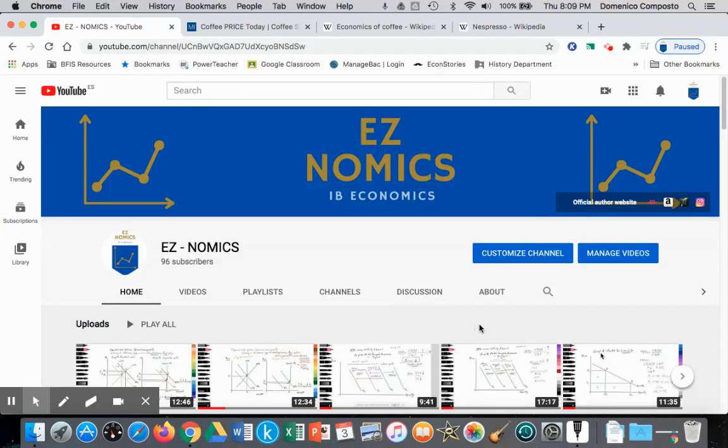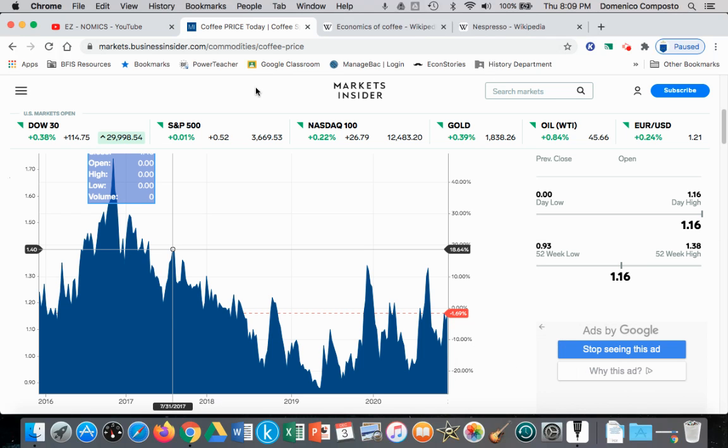Hello, this is Domenico with EZnomics, and we're going to look at a microeconomic concept: price elasticity of demand and price elasticity of supply, understanding why primary commodities have predominantly inelastic supply and demand curves, and why manufactured goods have predominantly elastic demand and supply curves. So let's take a look.